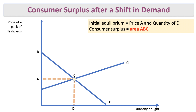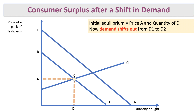What happens if there's an increase in demand? As exams approach, market demand for flashcards increases from D1 to D2 — an outward shift. The total willingness to pay goes up from B to E, so the maximum price people are willing and able to pay is now higher. As a result, the equilibrium moves from C to G.